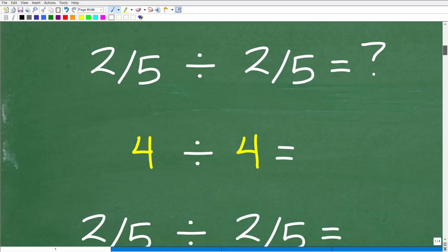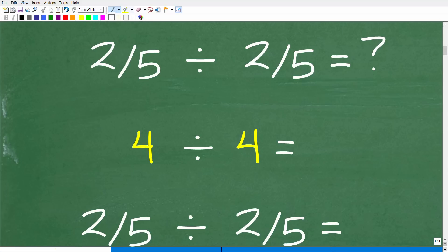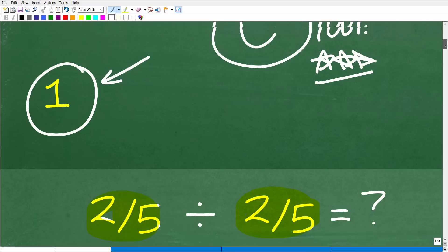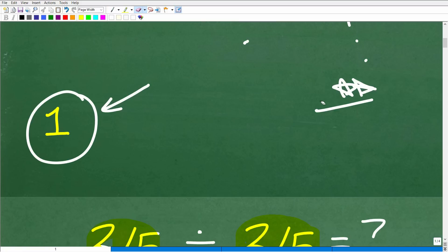And we're going to go ahead and get into this right now. So before we actually do this problem, 2 fifths divided by 2 fifths, let's just kind of review what happens when we take a number and divide it by itself. So we'll just use a simple number like 4. So 4 divided by 4 is what? Well, of course, it is 1. So anytime you take anything and divide it by itself, the answer is 1. And this works in algebra as well.